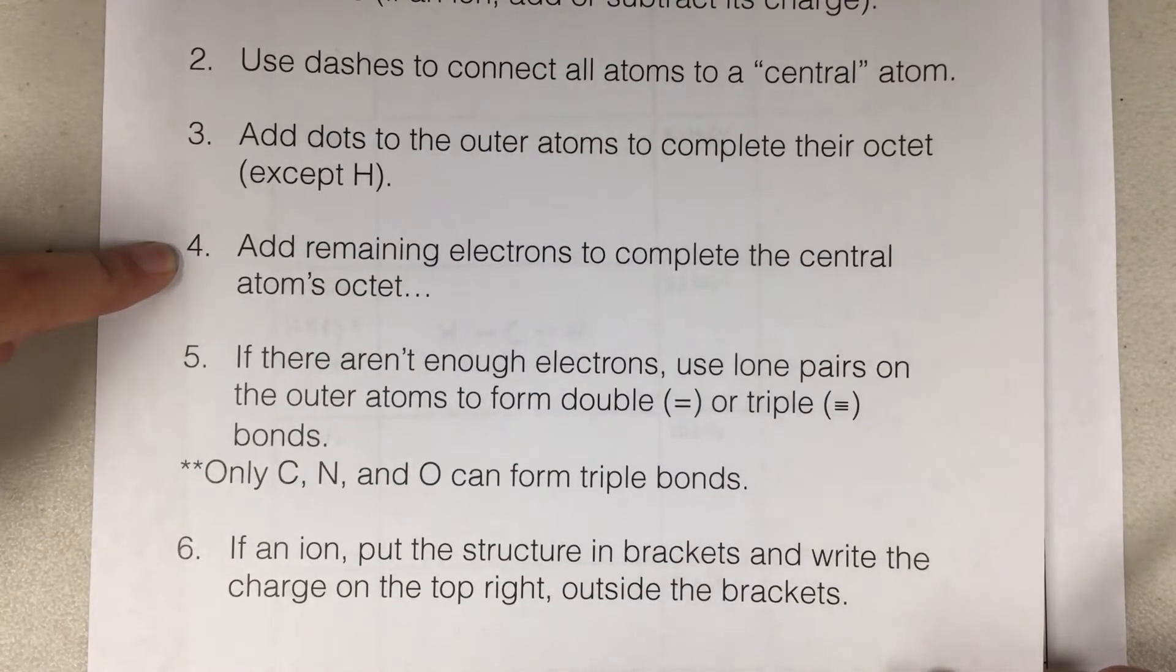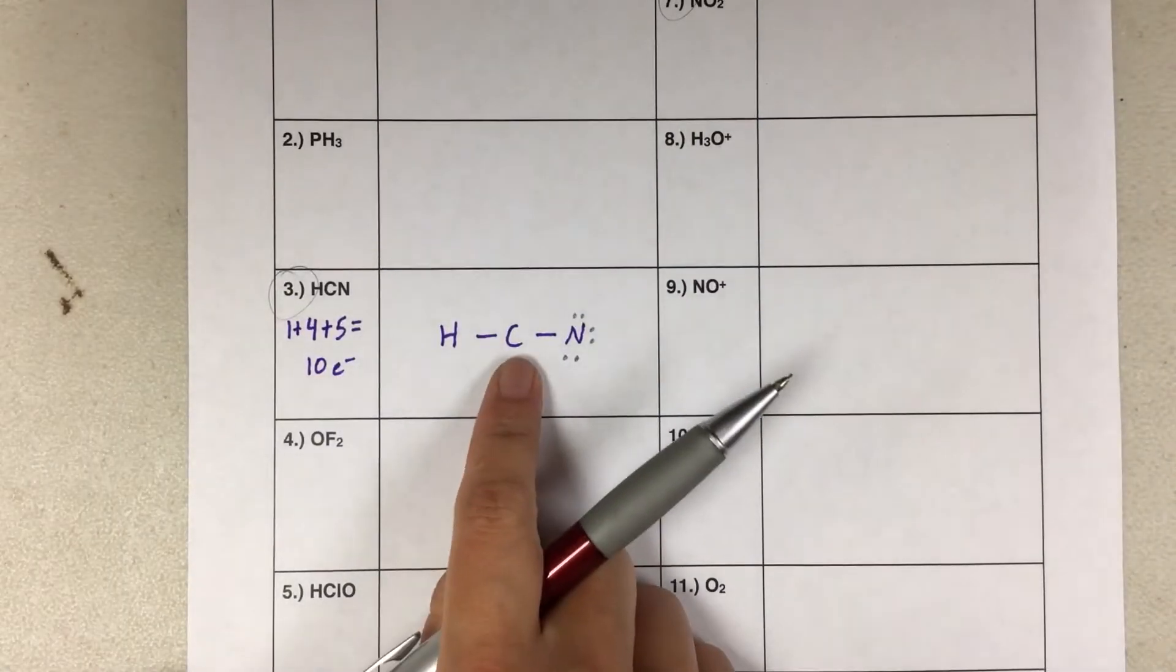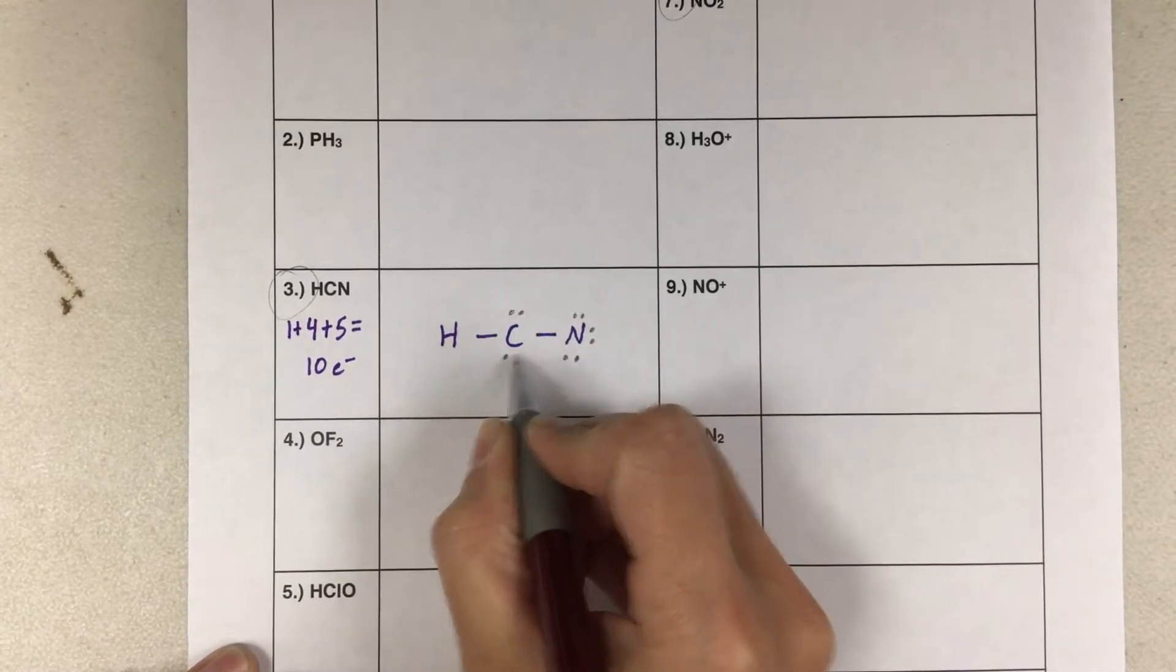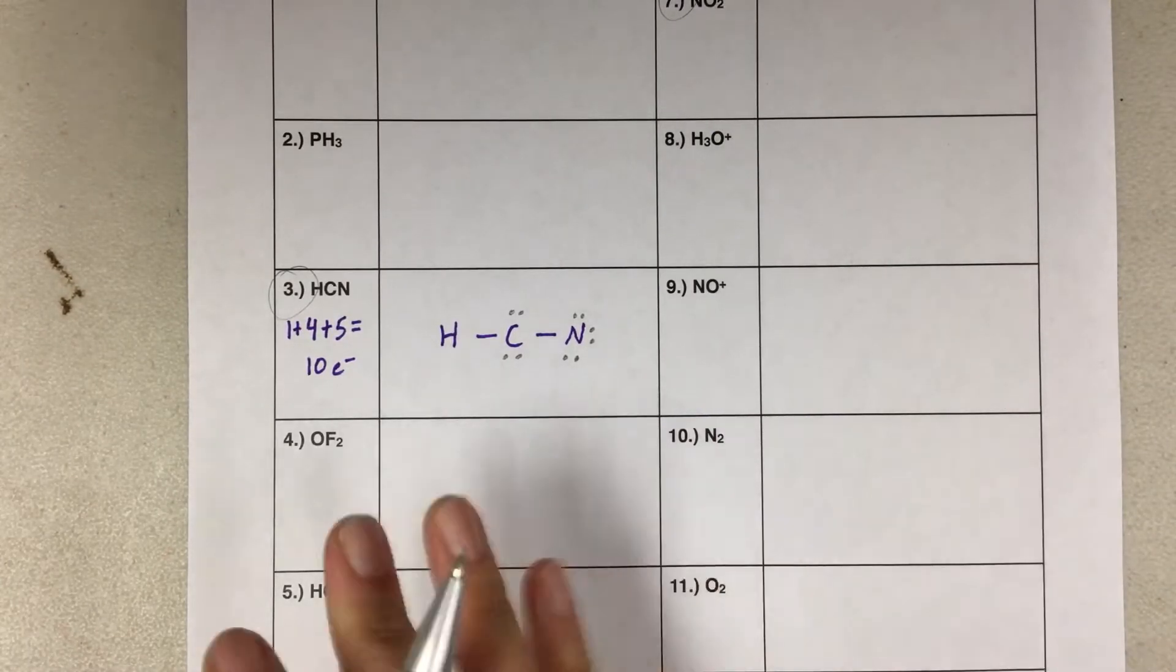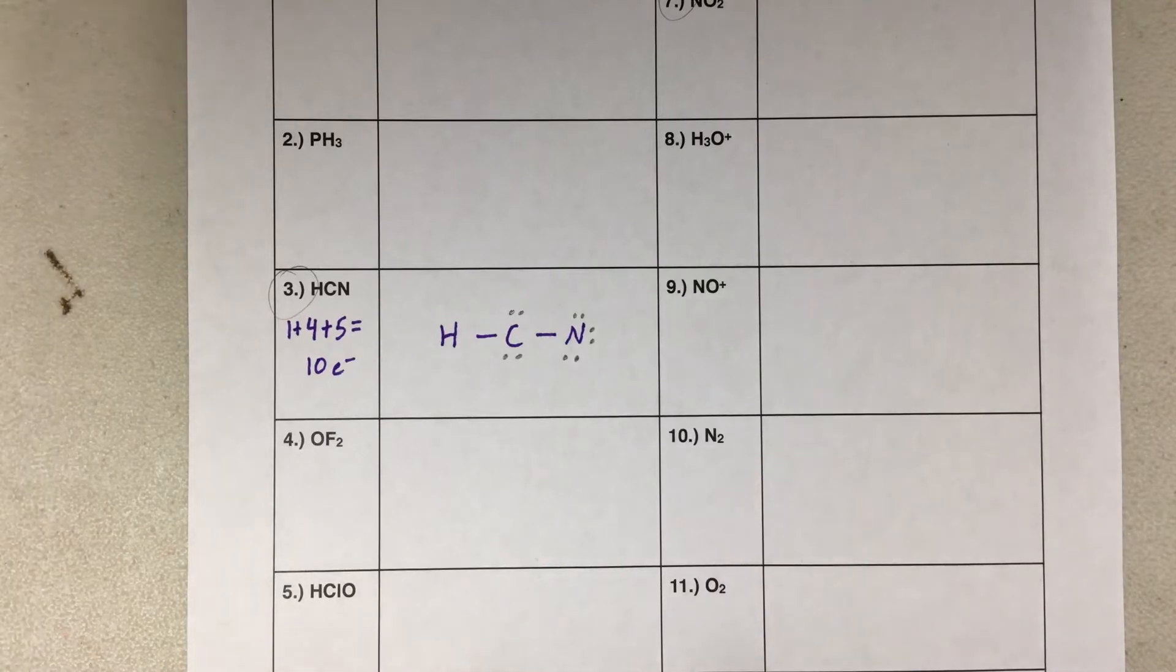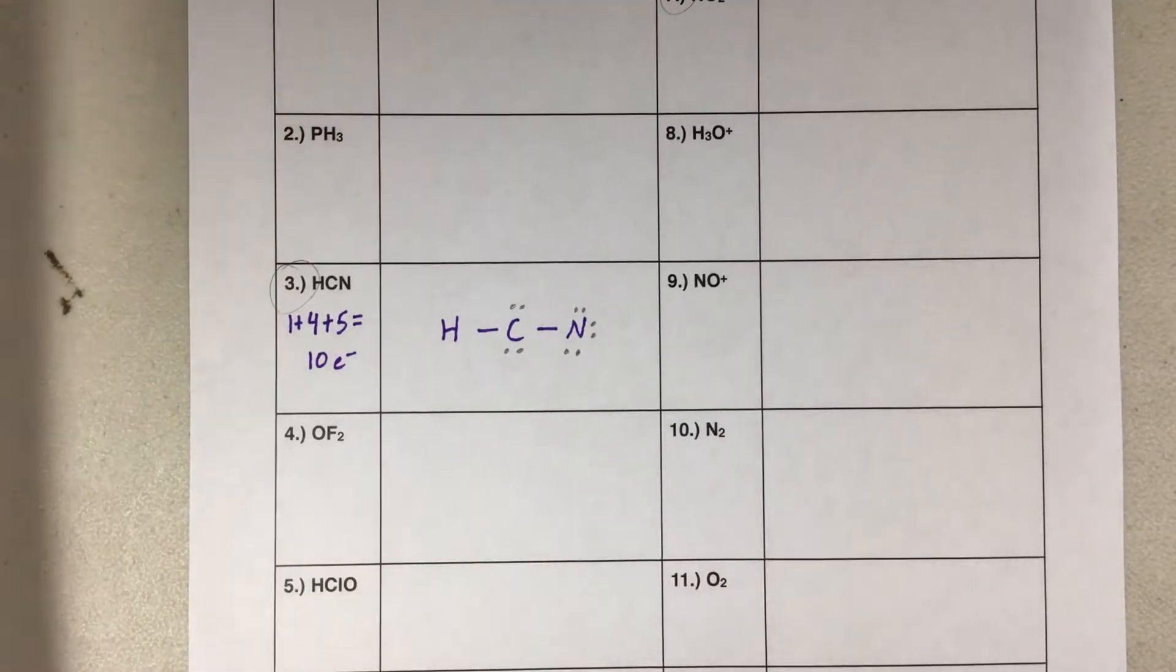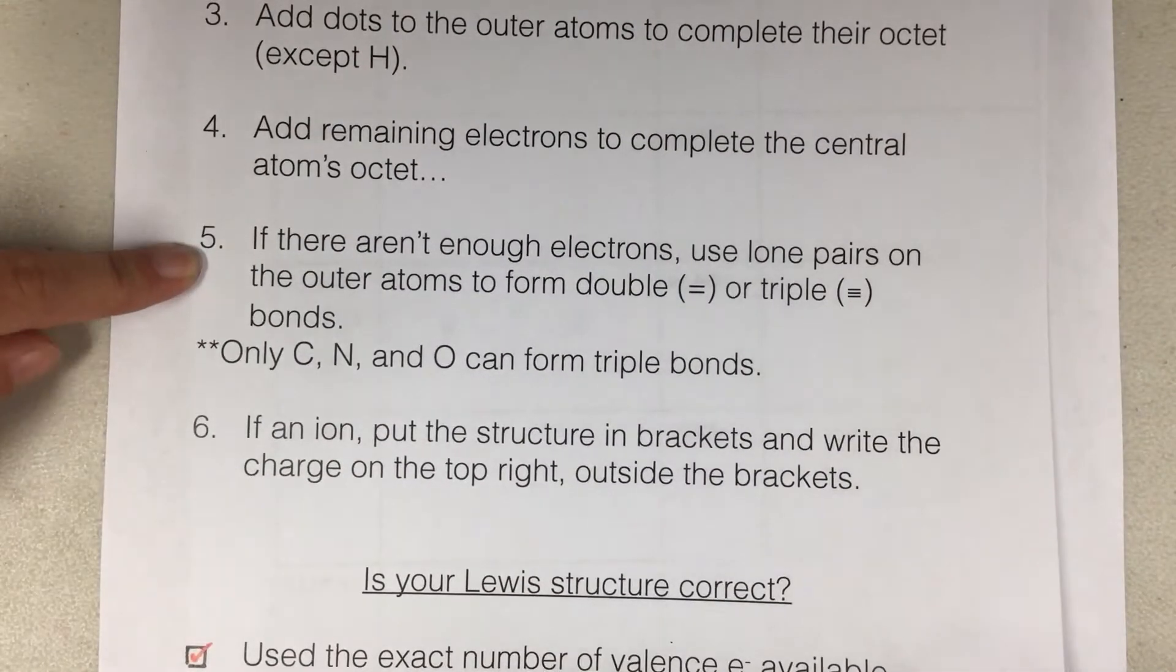Step four, add the remaining electrons to complete the central atom's octet. So the central atom is carbon. So far it has four electrons from these two bonds. So we'll add four more to give it eight. Some of you are screaming at home that this is wrong, and you're right. But I'm following the steps, and this is where the steps take me so far. But we will find out that this is indeed wrong for many reasons. One reason you can already know it's wrong is that there are dots on carbon. That is a big no-no.